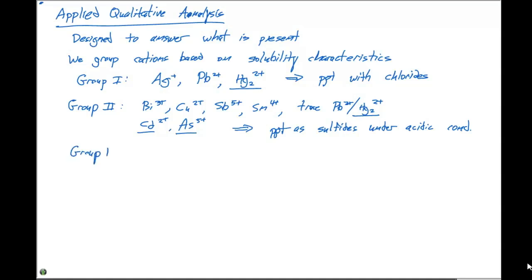Group three contains iron 2+, aluminum 3+, chromium 3+, cobalt 2+, zinc 2+, and manganese 2+. These differ from group two ions because they precipitate as sulfides under basic conditions. If we adjust the pH, we can selectively separate group two and group three ions.